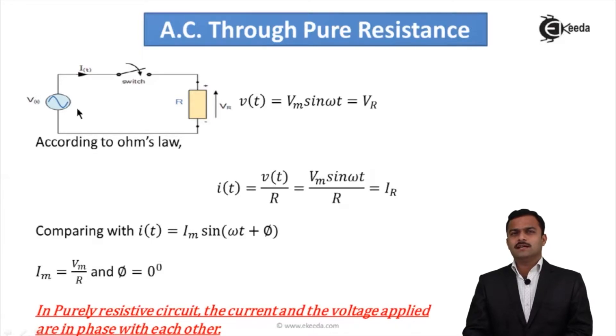This voltage and the voltage across resistance will be the same, so V(t) = VR. According to Ohm's law, the current flowing through the circuit will be total voltage divided by total resistance. So I(t) = V(t)/R. V is given by Vm sin(ωt). If I substitute, I will get Vm sin(ωt)/R, which is IR, the current flowing through the resistance.